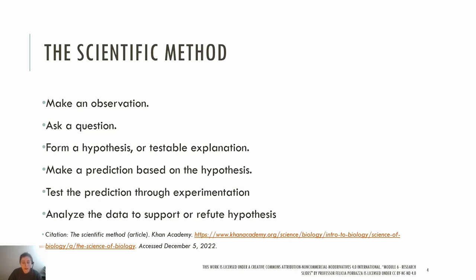The steps in the scientific method include making an observation, asking a question, generating a hypothesis or testable explanation, making a prediction based on that hypothesis, and then testing that prediction through research experimentation.